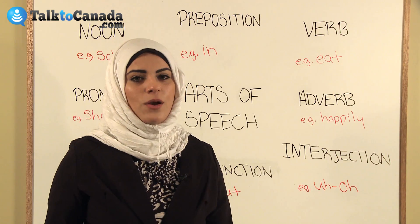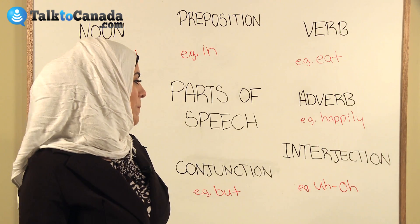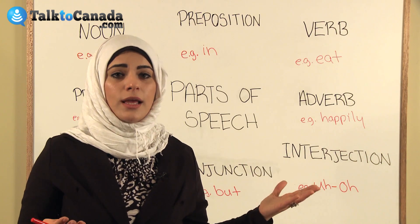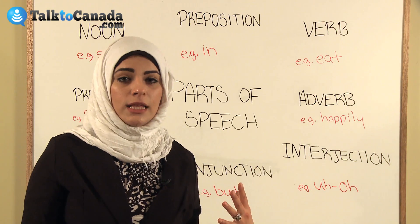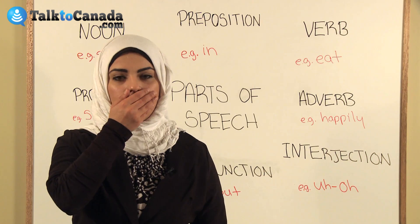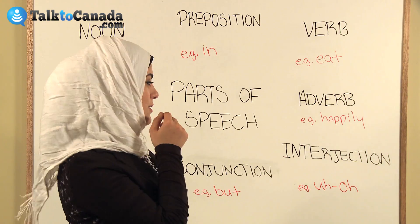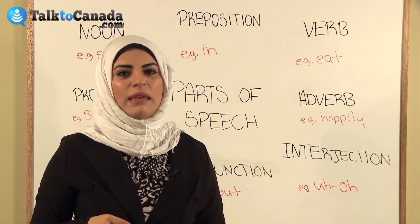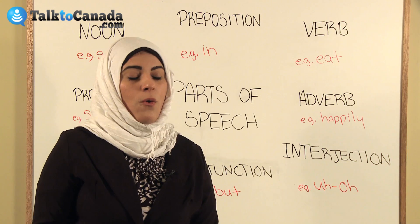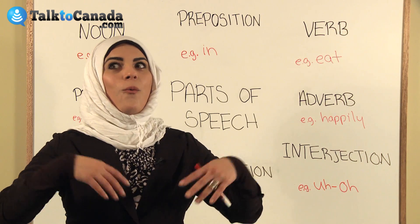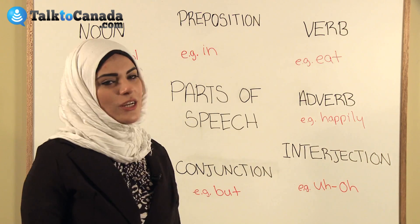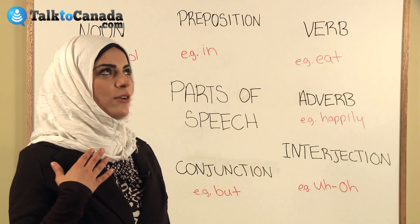Next we'll talk about an interjection. An interjection is a word that expresses a feeling. So an example of that is uh-oh — somebody's in trouble. Or maybe yuck, that's disgusting, when you feel disgusted. Or wow, when you're surprised. That's an interjection. I use a lot of interjections — it's my favorite part of speech.